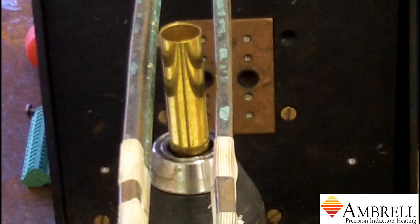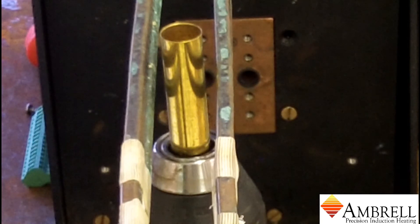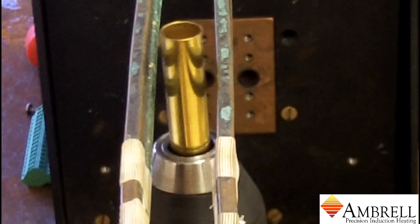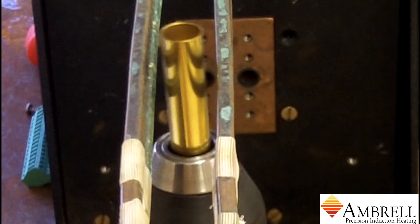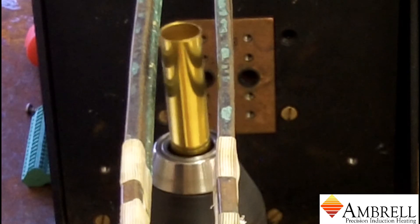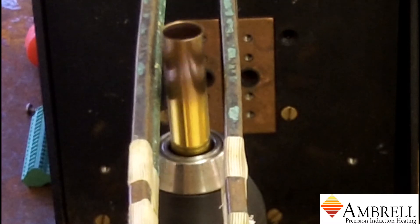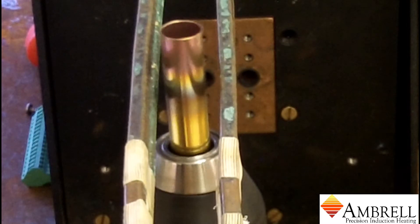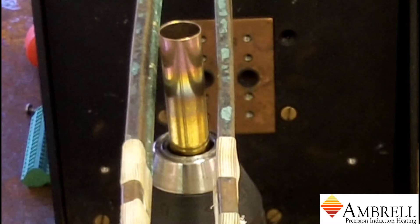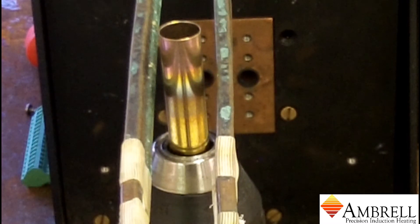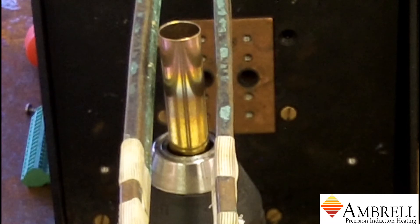We'll soon begin spinning the ammunition casing and now we'll turn the power on. You can see that the part barely gets red, and the power timed out at 3 seconds.